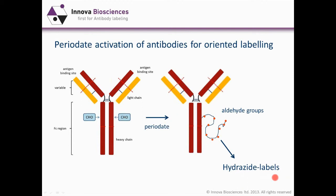The aldehyde groups — shown here as orange blobs — will react readily with hydrazide labels. Quite a few of these labels are now commercially available. It's a great way of addressing any issues with loss of affinity from reactions with lysines. This is another method of doing site-directed modification in this region using hydrazide labels and aldehyde groups.